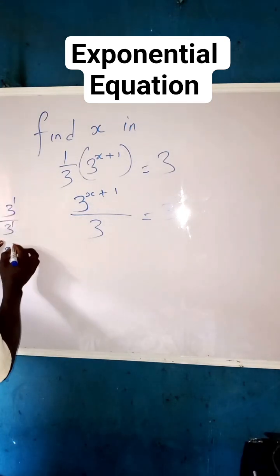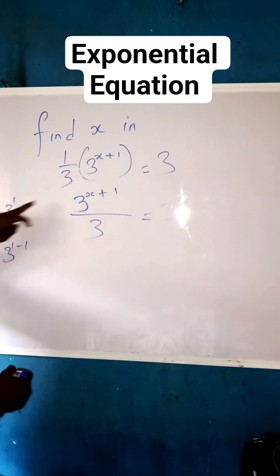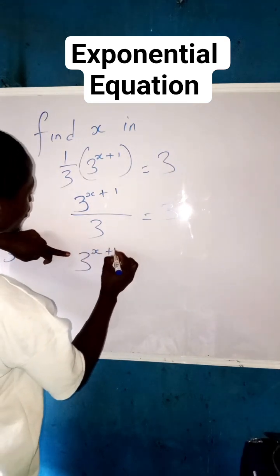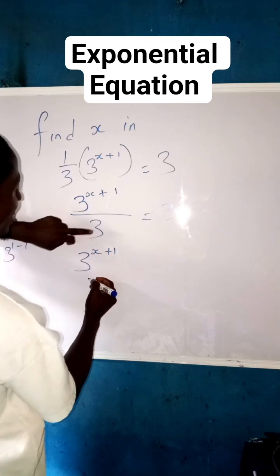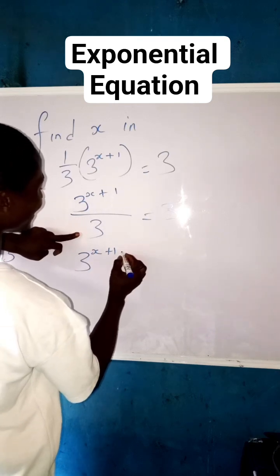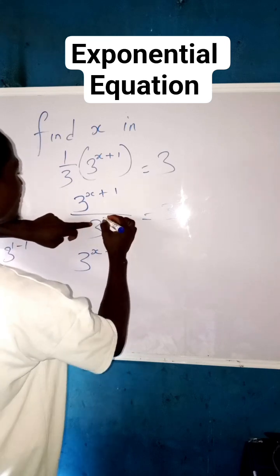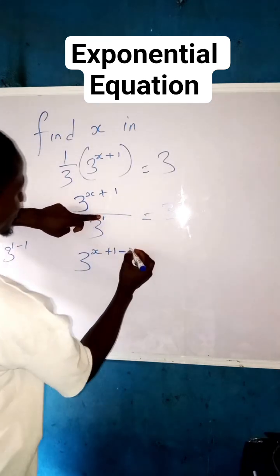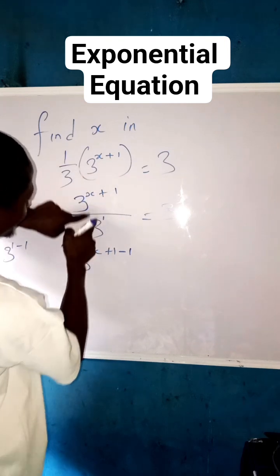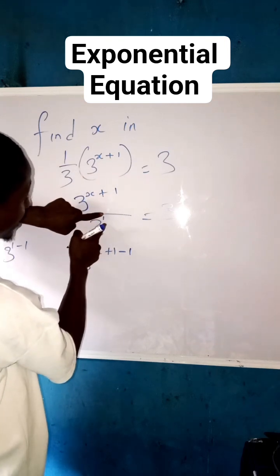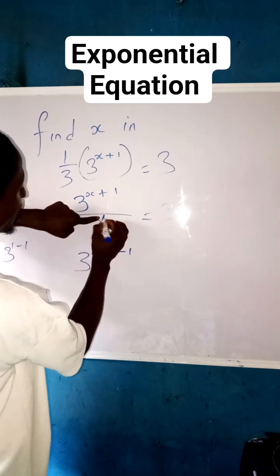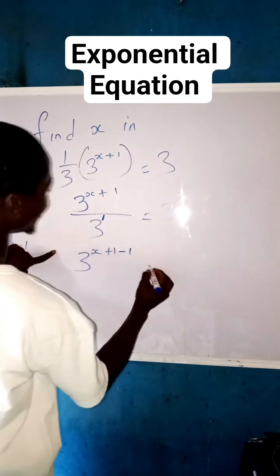Let's apply the law here. I'm going to have three to the power of x plus one. Because here is also three, they are the same base, so we now see minus the power of three here, which is one. So minus one. This x plus one is this x plus one. We are subtracting the power. This division becomes minus, so this three here, the power of three is one.